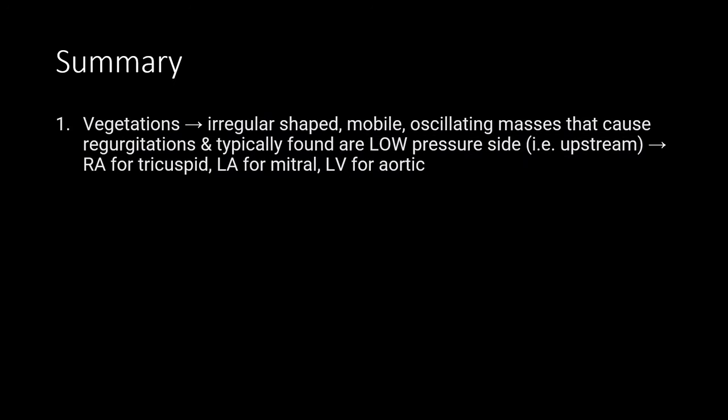I will summarize the three most important points of this case. First, vegetations are irregularly shaped, mobile, oscillating masses that cause regurgitation and are typically found on the low-pressure side of the valve, also known as the upstream side. So for the tricuspid valve, it would be seen on the right atrial side.